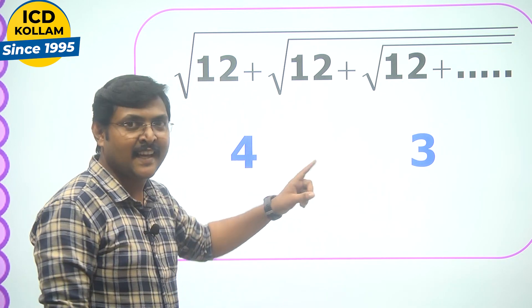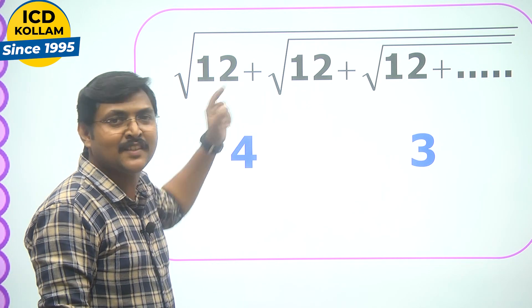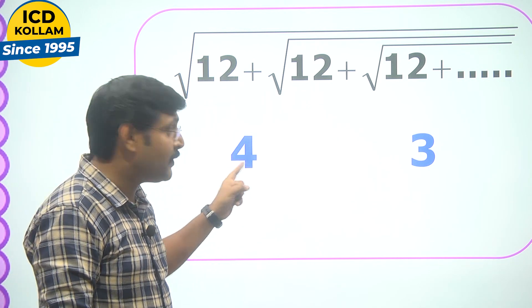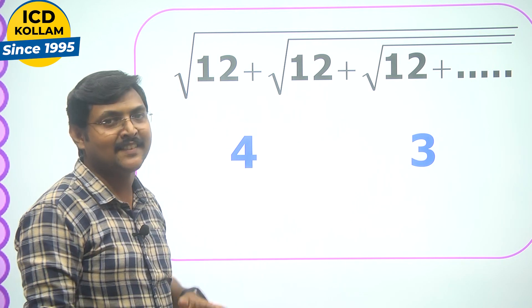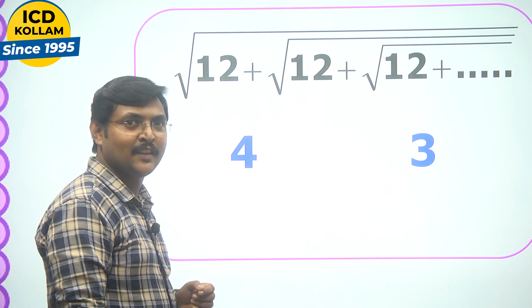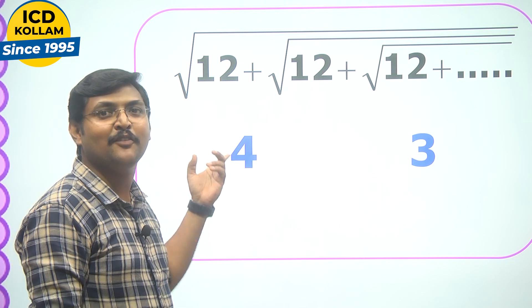Among them, the correct answer is, listen, since here the sign is addition sign, for sure the bigger one among these two will be the answer. The bigger one here is 4. So for sure, for this question, the answer is 4.